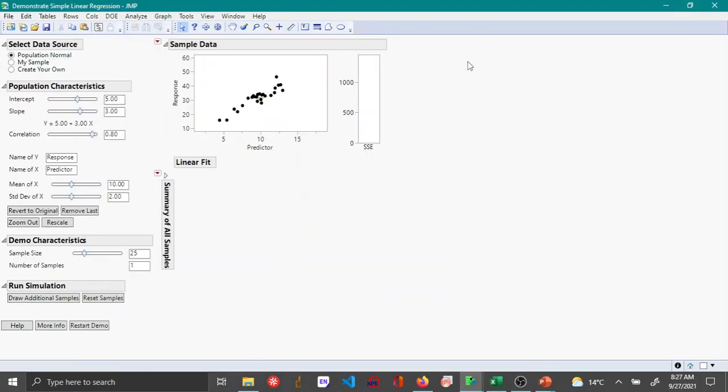In the Demonstrate Regression, this is a simulator which demonstrates regression. Since this is a simulator, you will have to enter the true intercept and the true slope values, and also the correlation and also the mean of the x values and the standard deviation. For the time being, I'm going to leave everything to default.